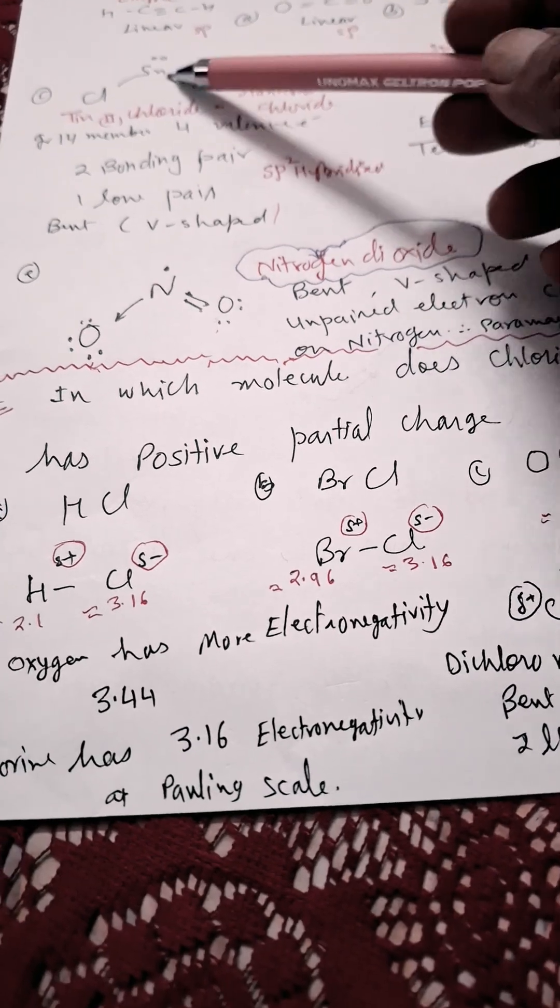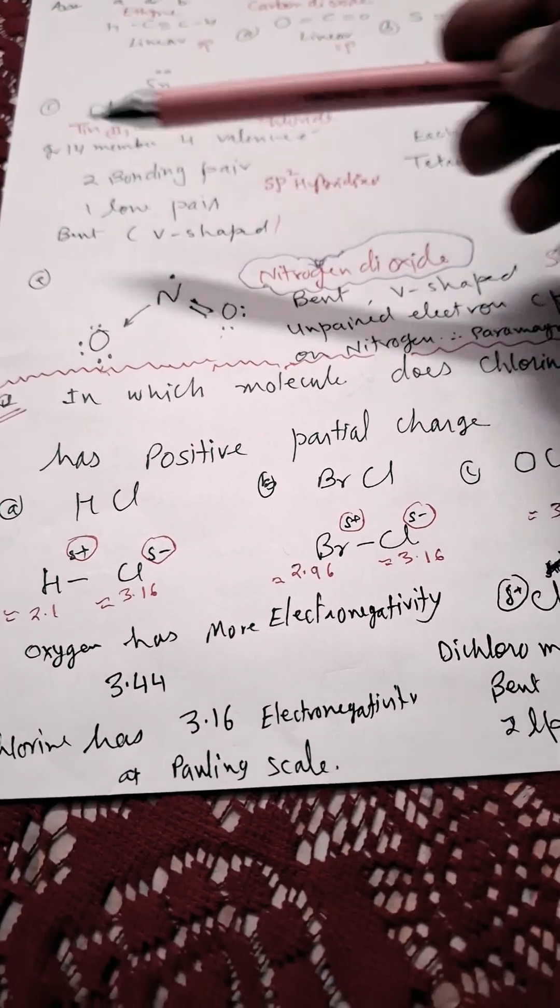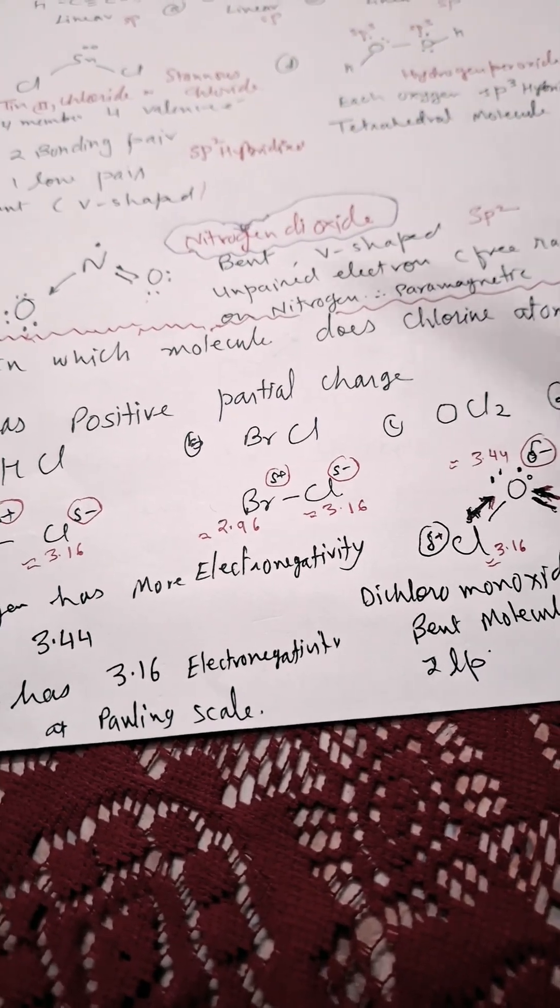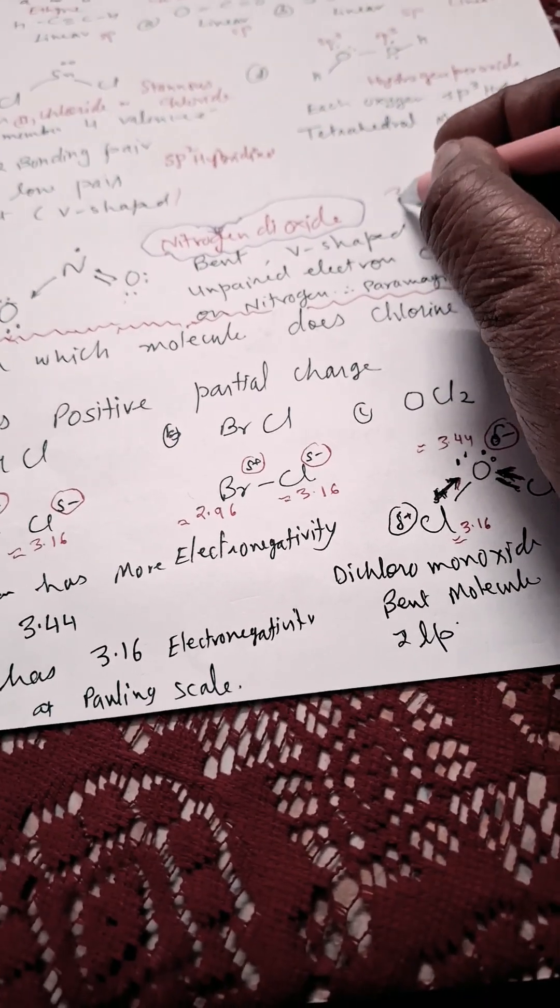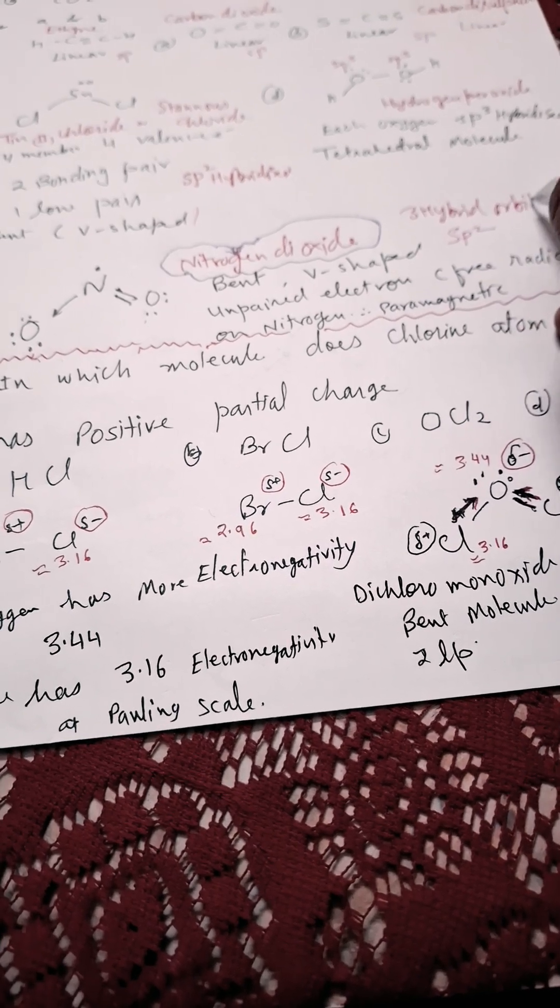Which is having three hybrid orbitals, Sn and N is having SP2 hybridization. That is why they need three hybrid orbitals.